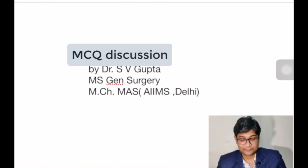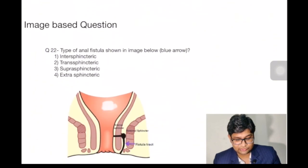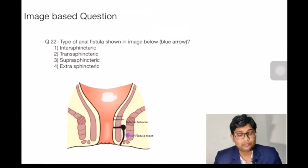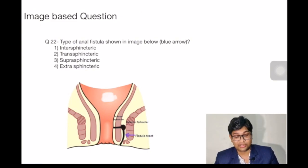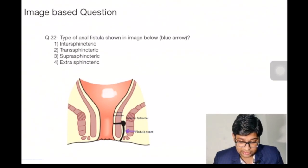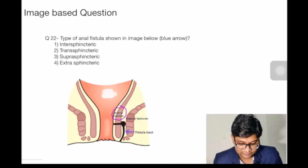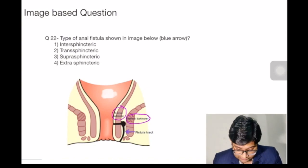Coming to the image-based question, Question 22 was: what type of anal fistula is shown in the image below, which has been marked by the blue arrow? The options were inter-sphincteric, trans-sphincteric, supra-sphincteric, and extra-sphincteric fistula. In the image, this is the internal sphincter already marked, this is the external sphincter marked, and this is the fistula tract marked by the blue arrow.